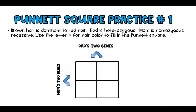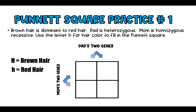Here's a practice problem: brown hair is dominant to red hair. Dad is heterozygous and mom is homozygous recessive. Use the letter H for hair color. The first thing we do is define dominant and recessive — never skip this step. Capital H equals brown hair, which is dominant. Red hair is lowercase h.